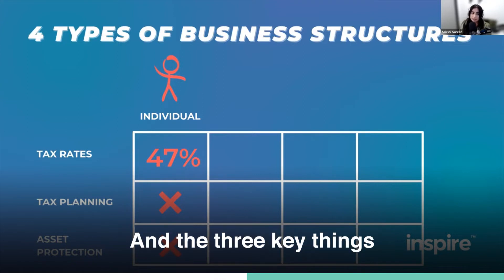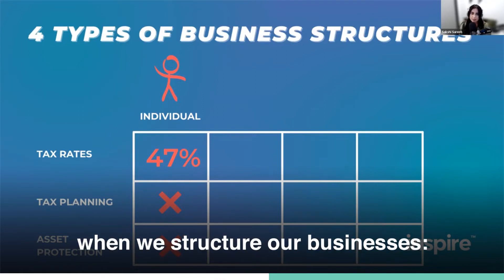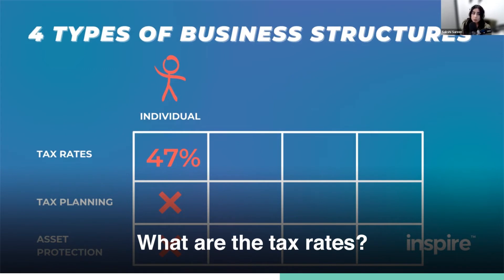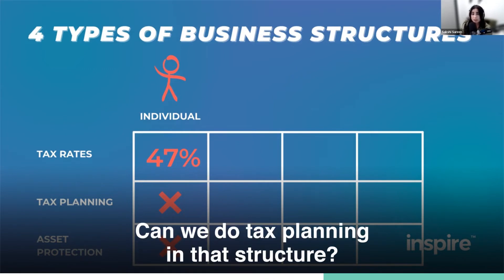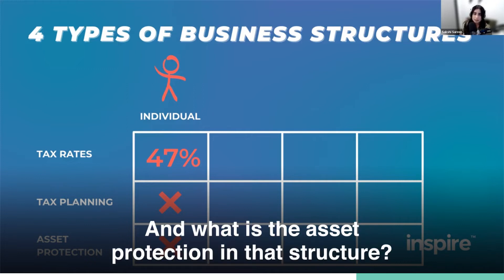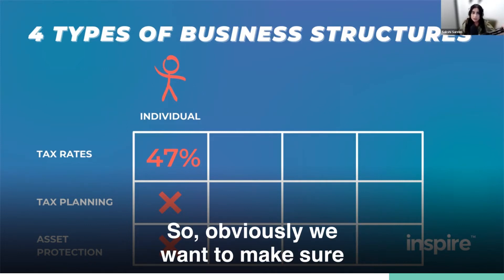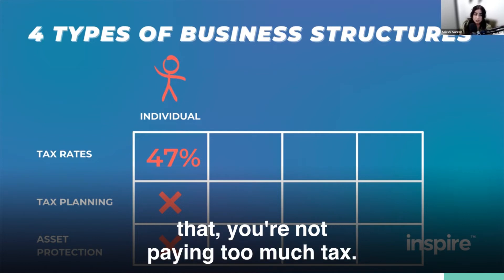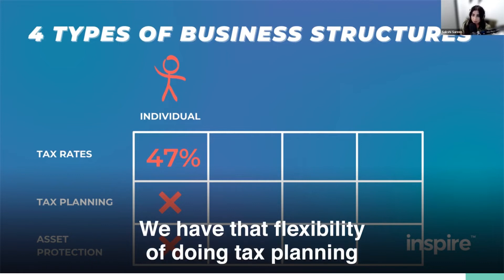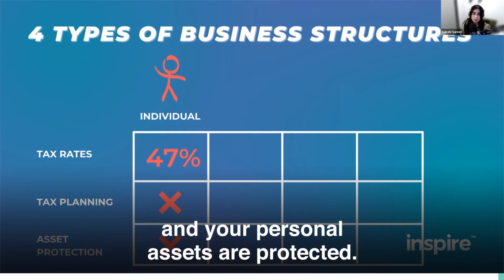The three key things when we structure our businesses are: what are the tax rates, can we do tax planning in that structure, and what is the asset protection in that structure? We want to make sure that when we set up a business for you, you're not paying too much tax, we have that flexibility of doing tax planning, and your personal assets are protected.